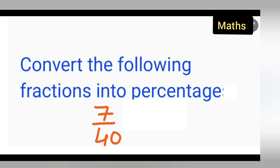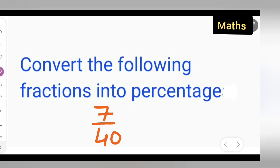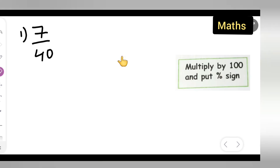So 7 upon 40 is given. This is a fraction and we have to convert this fraction into a percentage. So let us convert this 7 upon 40 into a percentage.